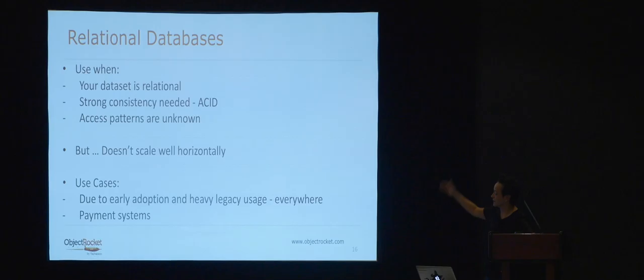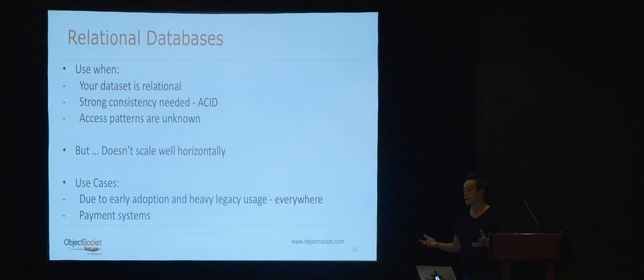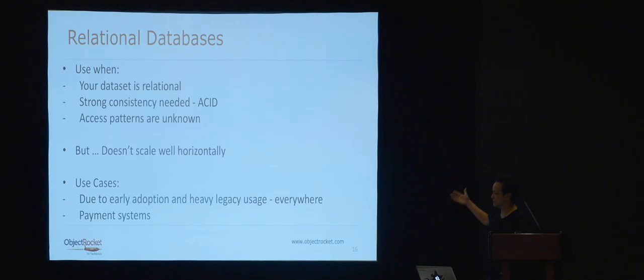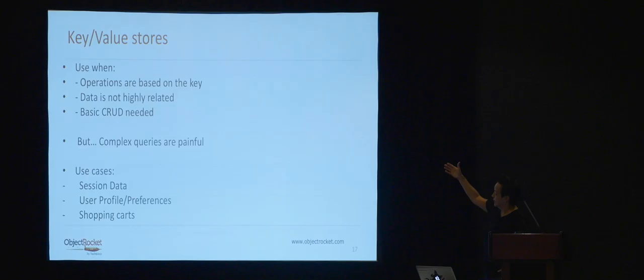Relational databases offer strong consistency and schema flexibility — you can always add columns and change indexes. But eventually indexes and sheer data sizes grow and they're not going to keep up with speed. Even with Exadata — massive engine, massive compute, memory, RAM, CPU — they can't keep up with certain workloads today, specifically logs and events. But they're still there for payment systems.